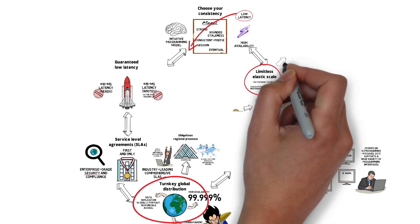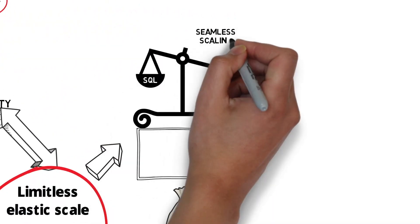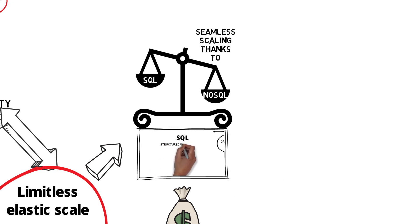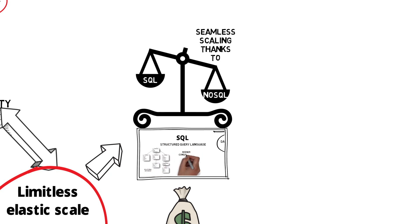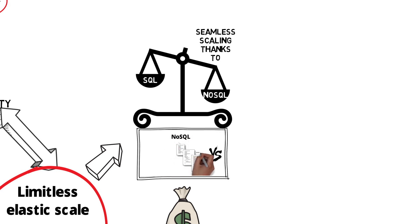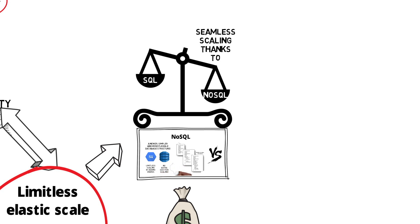Let's not forget about limitless elastic scale — we have seamless scaling thanks to the NoSQL language. With a relational database, we use SQL, Structured Query Language, usually for traditional databases offering higher consistency and reliability, optimal for very complex data sets. A NoSQL or non-relational database allows for more flexibility in the database structure. Google Cloud Datastore, DynamoDB, and Azure Blob Storage all have limitless scalability by adding shards — this is horizontal scaling on a database. You replicate the schema and divide what data is stored in each shard based on a key.